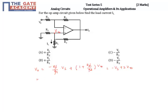KCL at Vx. So 0 minus Vx by R2 is equal to entering equal to leaving.